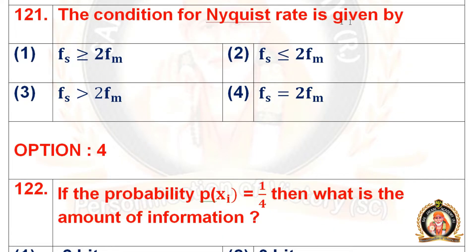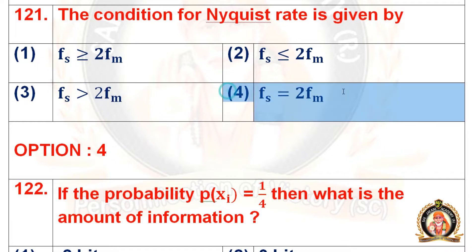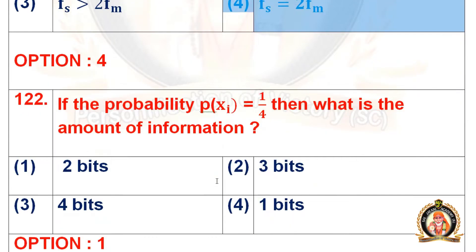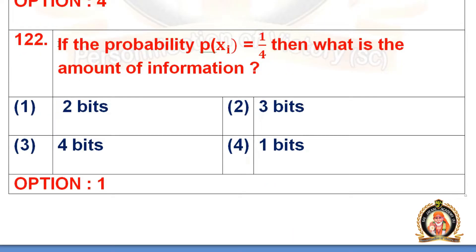Question 121: The condition for Nyquist rate is given by. Options are FS ≥ 2FM, FS ≤ 2FM, FS > 2FM, and FS = 2FM. The right option for question 121 is the fourth one, that is FS = 2FM.